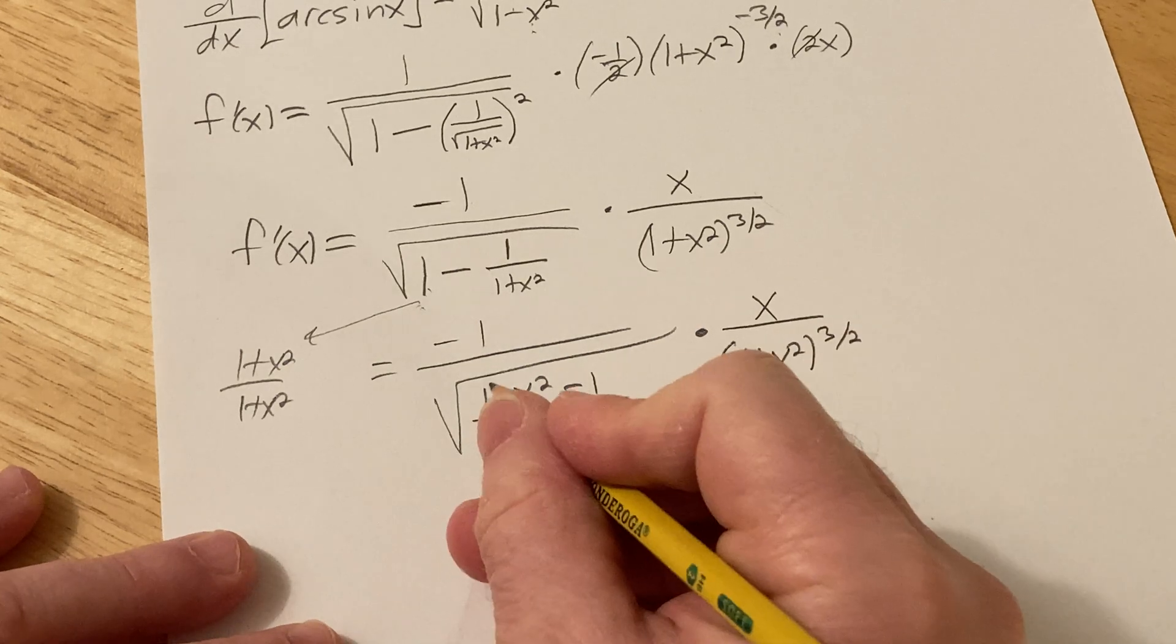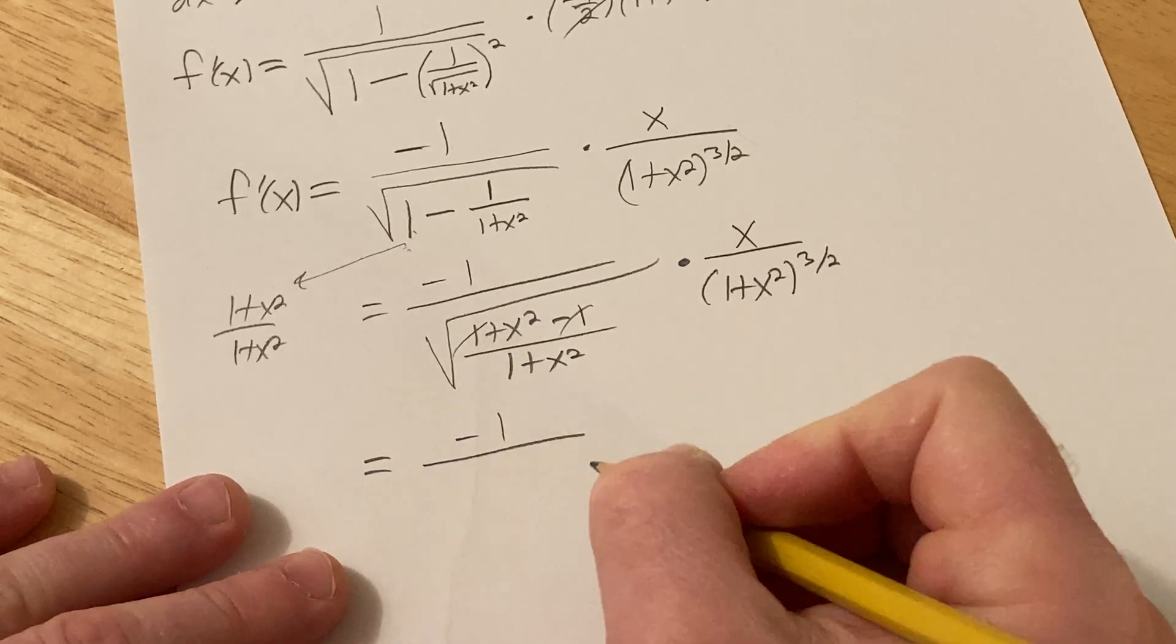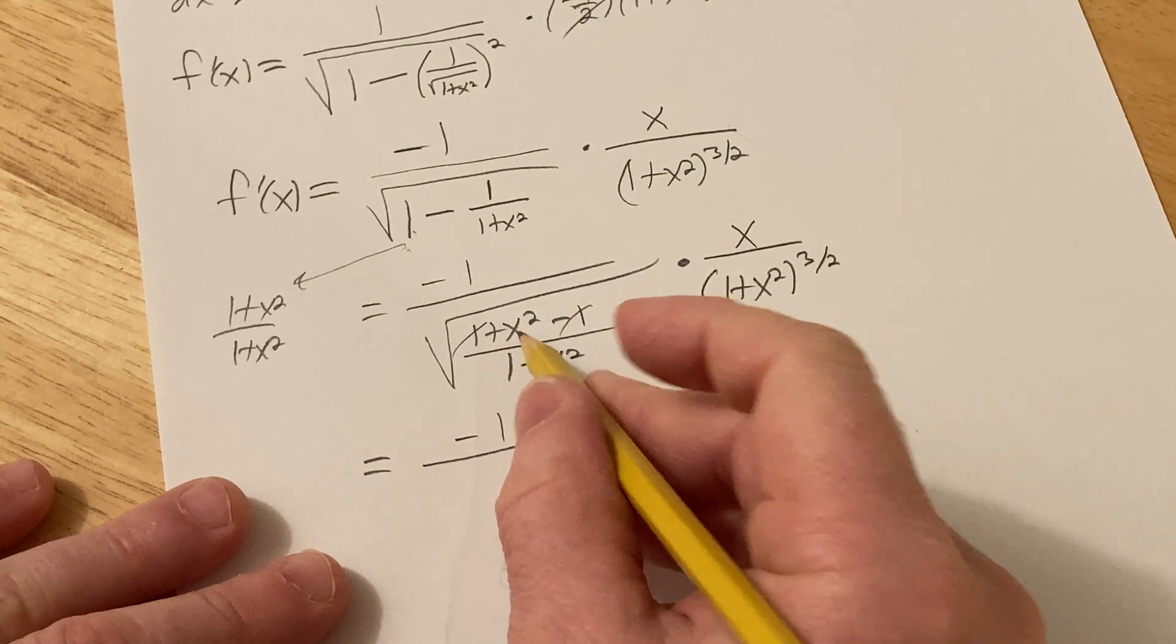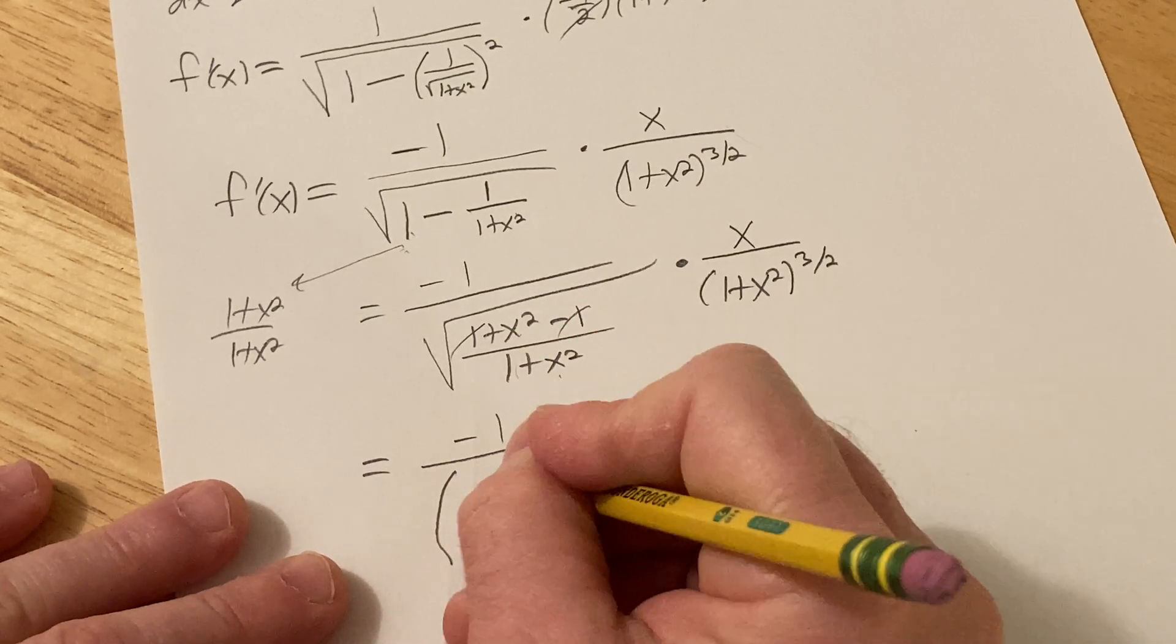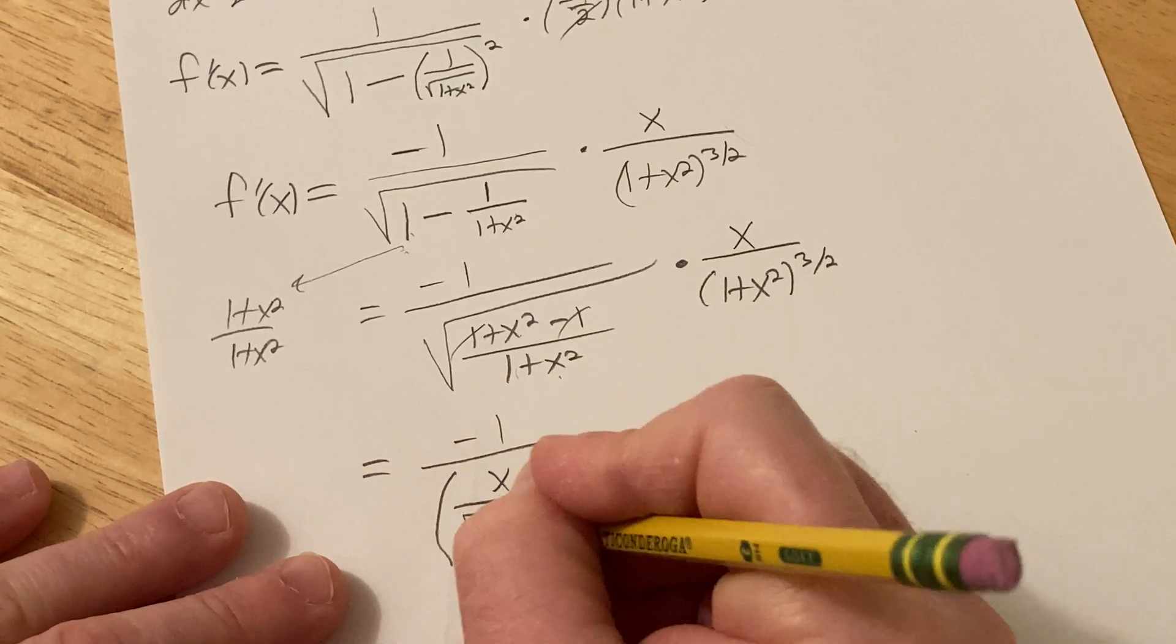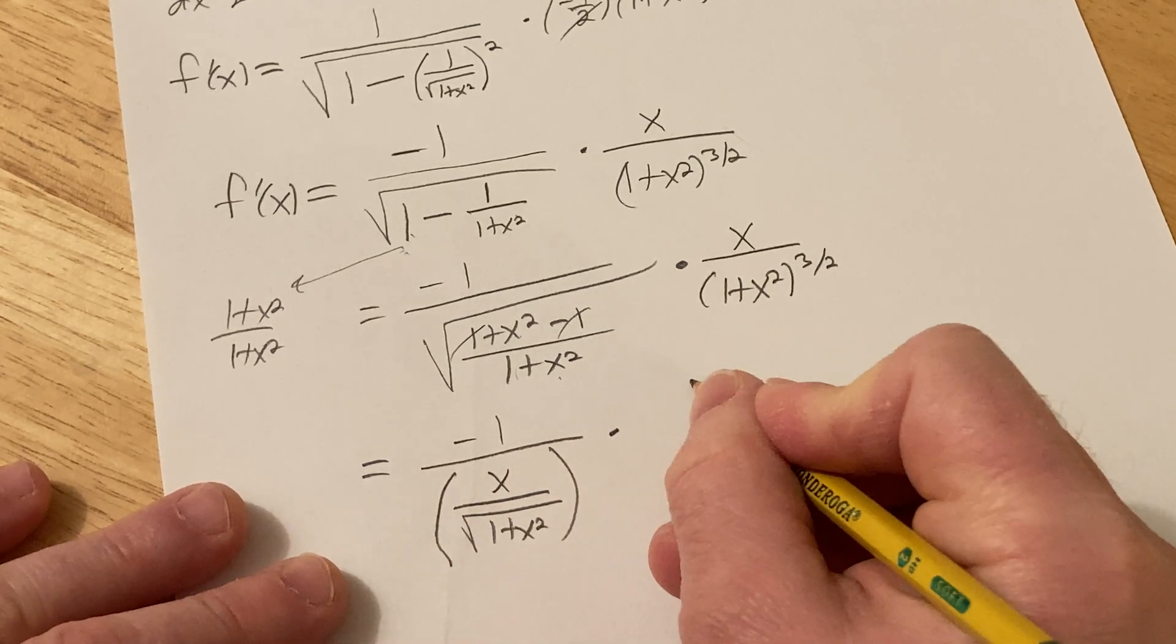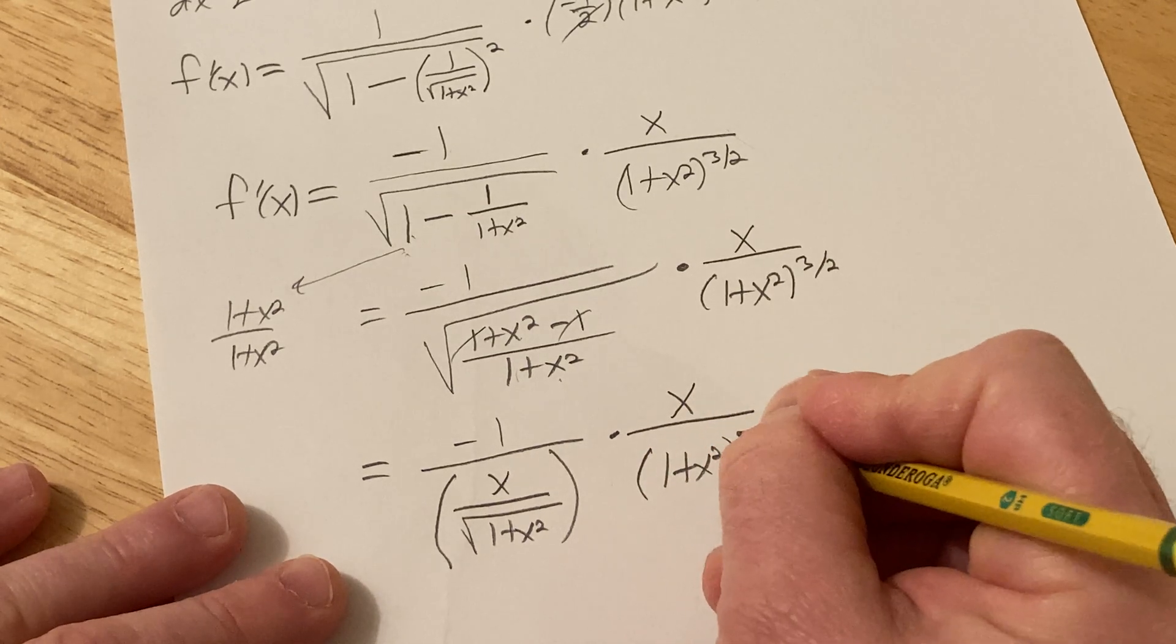All right, look at that, the 1's canceled, so this is negative 1 over, and we're going to have the square root of x squared over 1 plus x squared, just, let's just take the square root of each piece, and pretend x is positive, so the square root of x squared is x, times x over 1 plus x squared to the 3 halves.